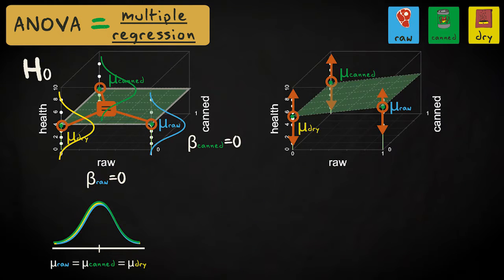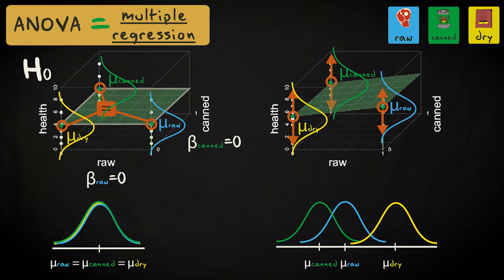If we recall the visual representation of the null hypothesis in one-way analysis of variance, you can see that the flat plane corresponds with population distributions with the same mean, and the alternative corresponds with population distributions with different means.